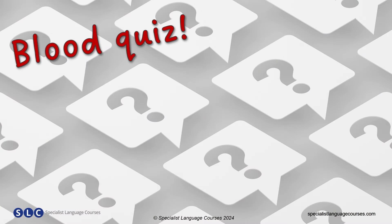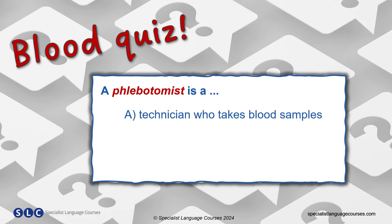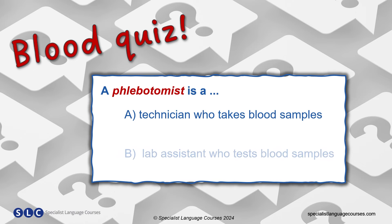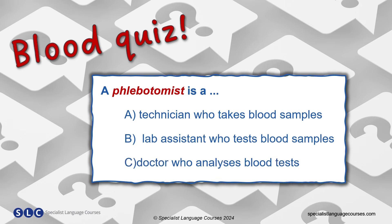Let's start with a quiz. A phlebotomist is: A, a technician who takes blood samples; B, a lab assistant who tests blood samples; or C, a doctor who analyzes blood tests.